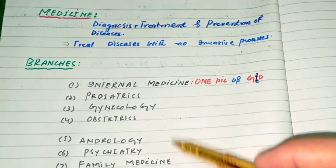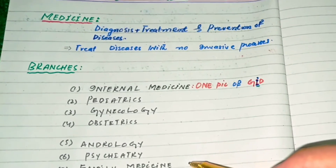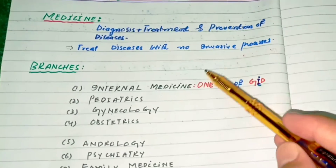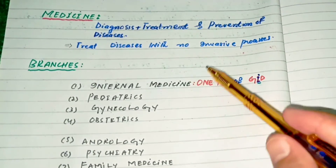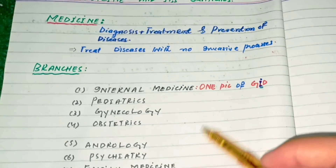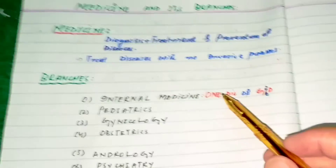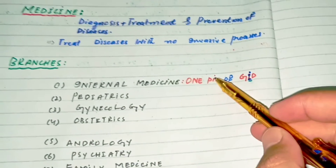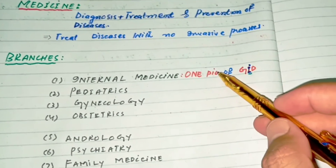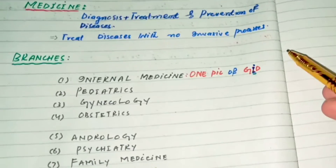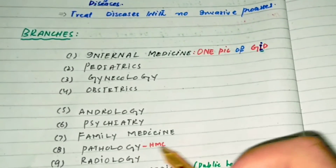Family medicine, as I mentioned, is similar to internal medicine but covers all age groups. Family medicine also has subspecialties like oncology, nephrology, endocrinology, pulmonology, infectious disease, cardiology, gastroenterology, and dermatology — the same subspecialties as internal medicine.